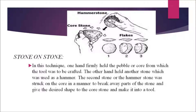The stone-on-stone technique: one hand firmly held the pebble or core from which the tool was to be crafted. The other hand held another stone used as a hammer. The hammer stone was struck on the core to break away parts of the stone and give the desired shape, making it into a tool. You can see in the picture how the stone-on-stone technique was used by early humans.